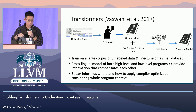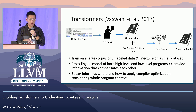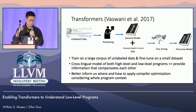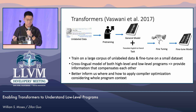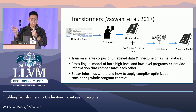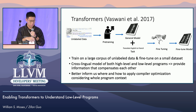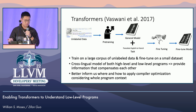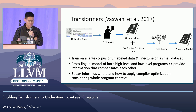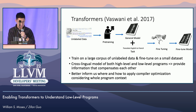This also allows us to have a model that's translingual — one that takes in both French and English, or both high-level and low-level programs. This provides information that can compensate for each other, because there are certain really good high-level abstractions on the high level that we want, but we also want the specific extra attributes on the low level that are hidden on the high level. And this can better inform us when and how to apply transformer optimizations considering the context of the whole program.